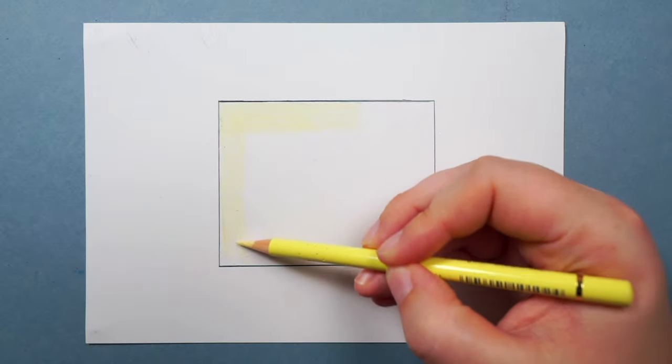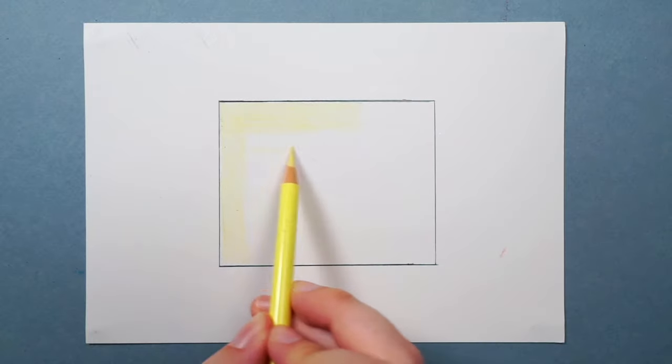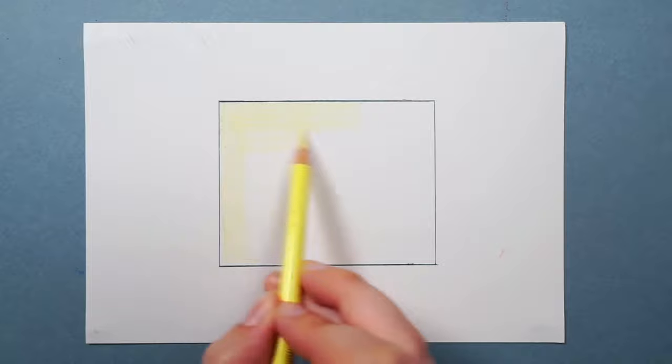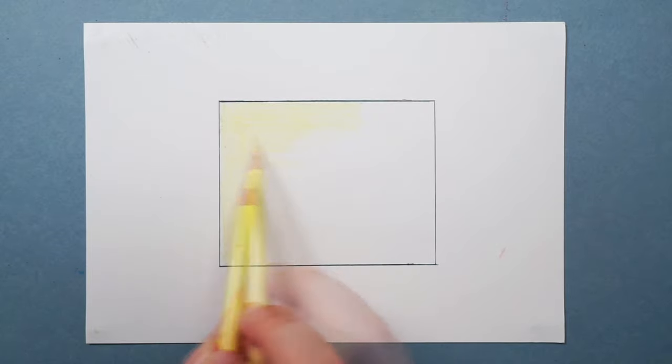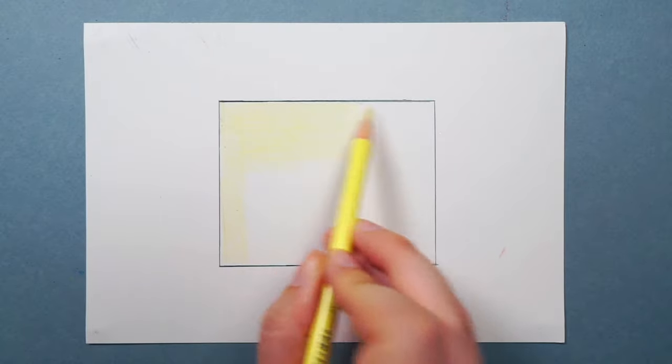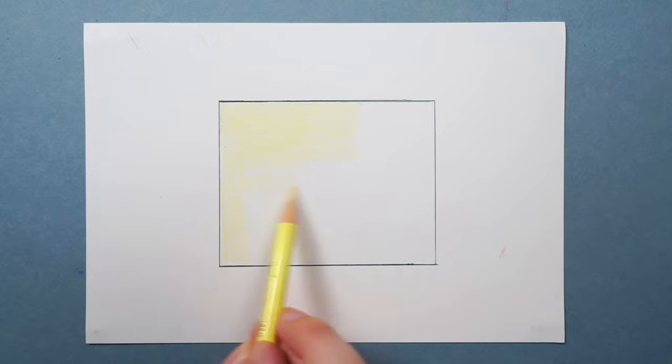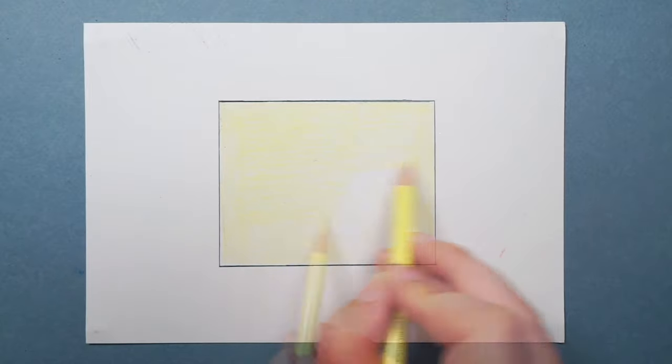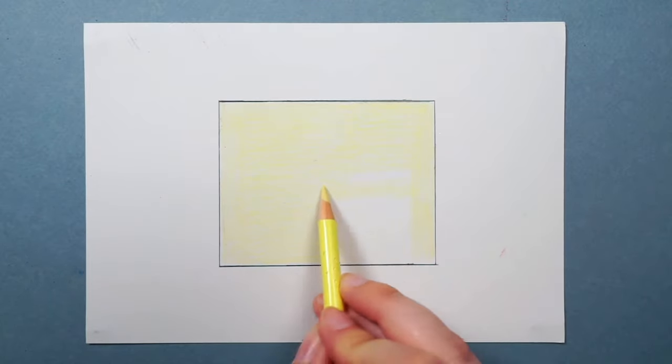This is the lightest yellow in my set and I just want to put down a nice smooth even coverage. So notice first off I am pressing very lightly and to help me do that I'm holding the pencil quite a bit further back than you would normally expect. I'm also working in circular motions, very fast circular motions which is going to help this look as smooth as I can. And I'm literally just covering the whole area that I'm going to be drawing this fur.